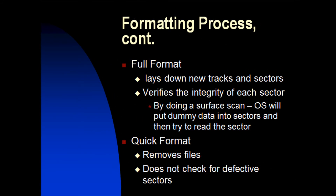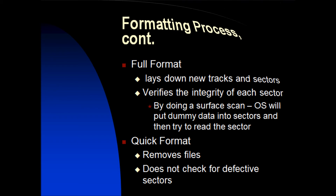Formatting process. Full format: lays down new tracks and sectors and verifies the integrity of each sector by doing a surface scan — the operating system puts dummy data into the sector and tries to read it back. Quick format: simply removes files but does not check for defective sectors.